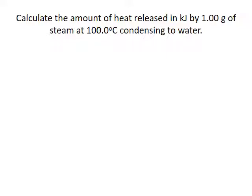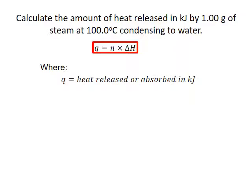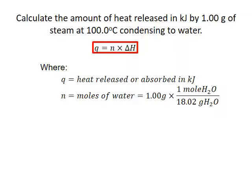We can use these enthalpies to calculate the amount of energy that might be released or absorbed during any process that involves a phase change. For example, we can calculate the amount of heat released by one gram of steam condensing into water. The formula we use is Q equals N times delta H. N stands for the number of moles of water involved, which is easily calculated from the grams given. The molar mass of water is 18.02 grams per mole.